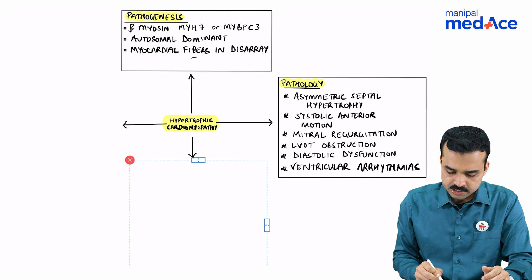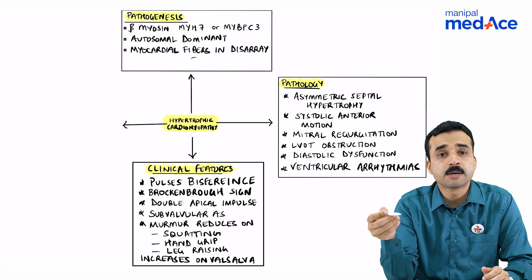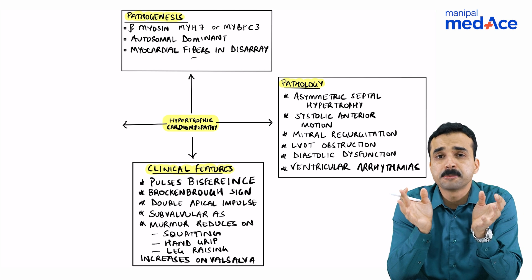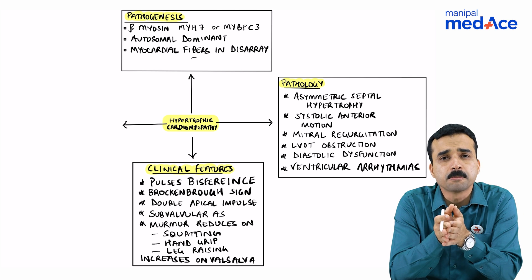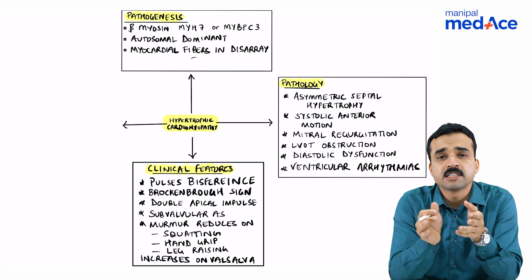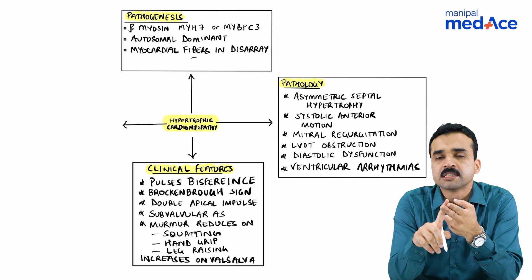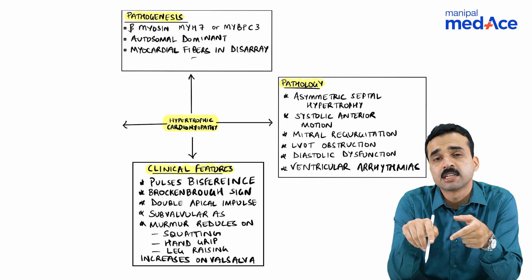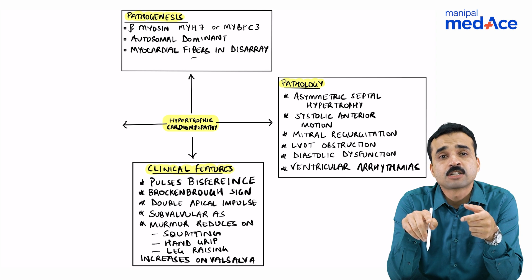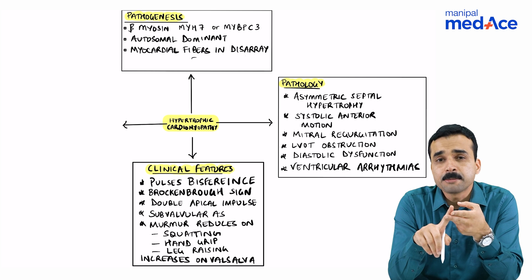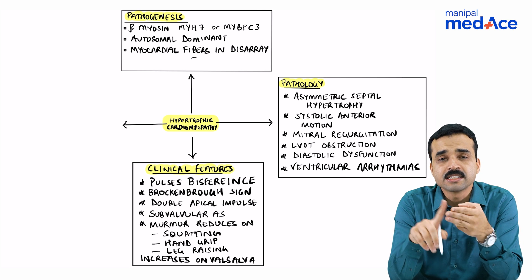Clinical features: patients will have pulsus bisferiens and Brockenbrough phenomenon, which is post-VPCs, they will have a paradoxical drop in the pulse pressure. On cardiac palpation, there may be a double or even triple apical impulse. They will also have subvalvular aortic stenosis, and the murmur of this lesion actually reduces on squatting, hand grip, and leg raising.